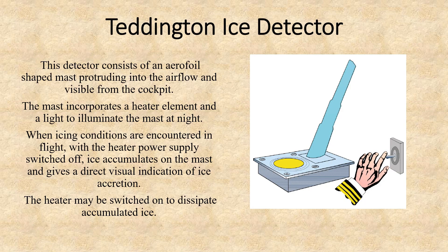The first type of device is called the Torrington ice detector. This detector consists of an airfoil-shaped mass protruding into the airflow and visible from the cockpit. The airflow is parallel to this detector and it is placed right between the first officer and the captain on the outside of the cockpit.